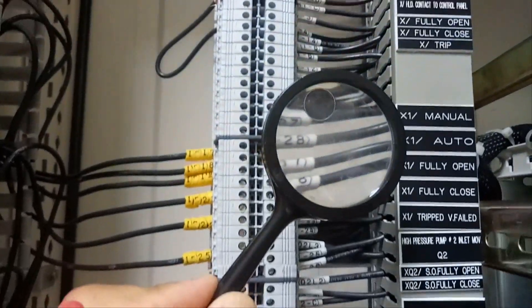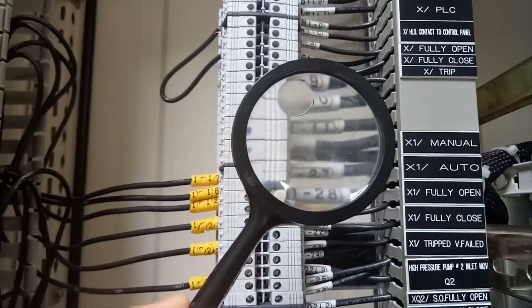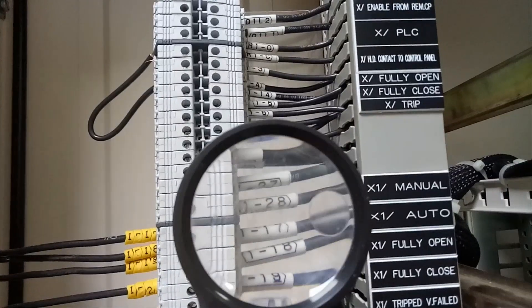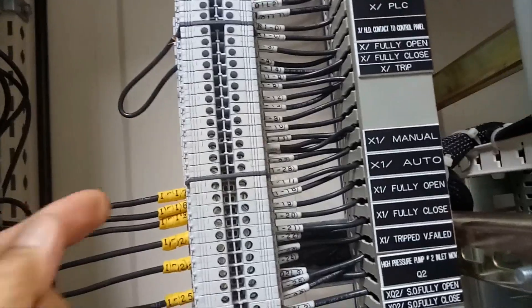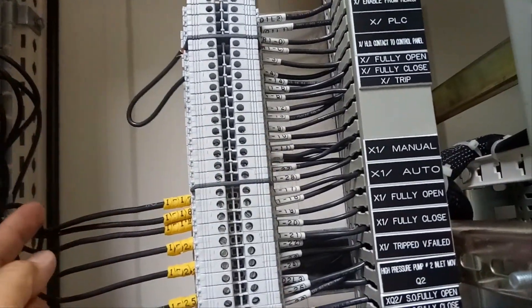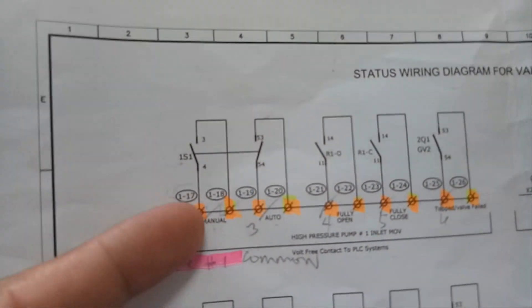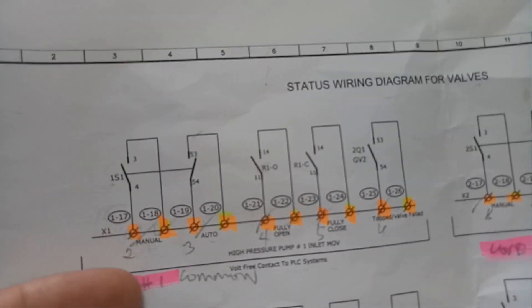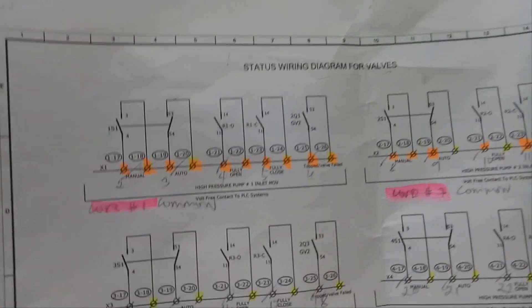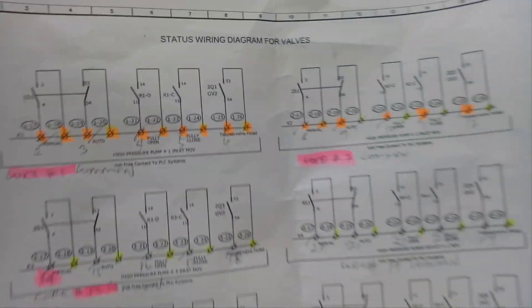Gamitan natin ang ating magnifying glass — ayan po yung 1-17. So dito naman po sa kabila ay 1-17 din. Ibig sabihin po ay ito ay papunta ng PLC. So ito pong side na ito ay papunta po ng PLC. Puntahan po natin itong PLC — itong 1-17 na ito — at tingnan po natin kung saan ito nakakonekta sa PLC. So mayroon din po tayong sinusunda na drawing sa PLC.